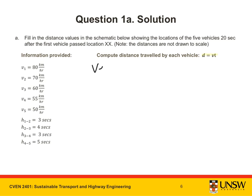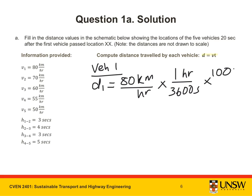For vehicle 1, the distance travelled is equal to the speed, 80 km per hour, converted into meters per second, multiplied by the time.